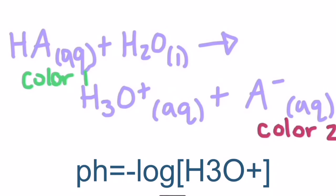If pH is high, the concentration of H3O+ is low, so equilibrium is to the right, so color two is produced.